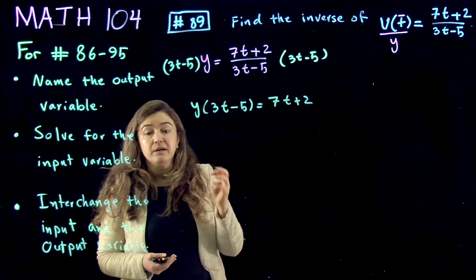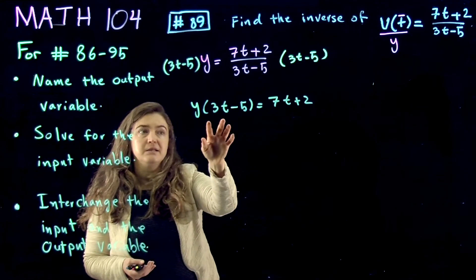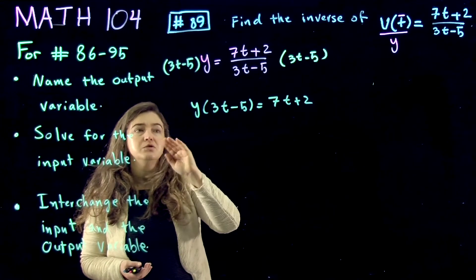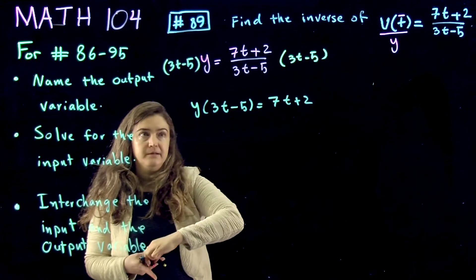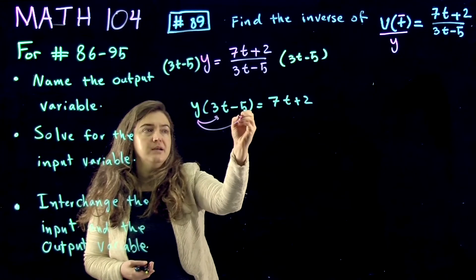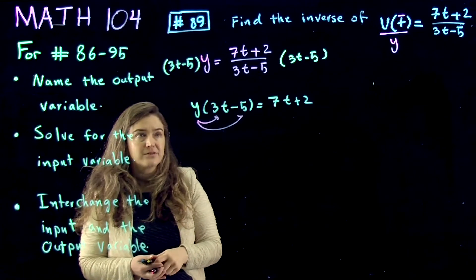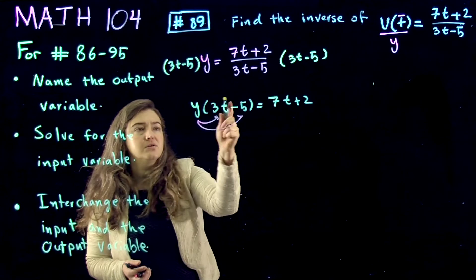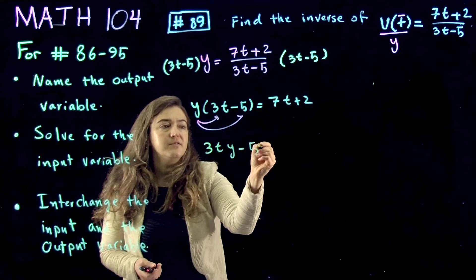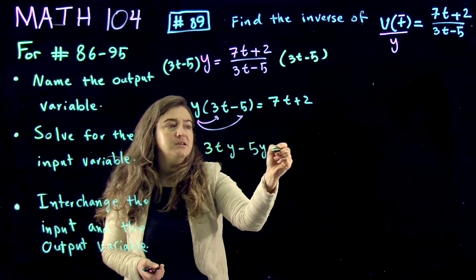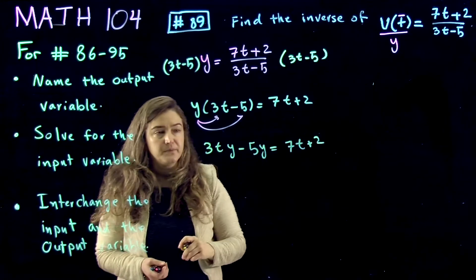Now the goal is to isolate the terms with t. To do that, I need to distribute y. So I distribute y to get all terms, not two factors. It would be 3ty minus 5y equals 7t plus 2.